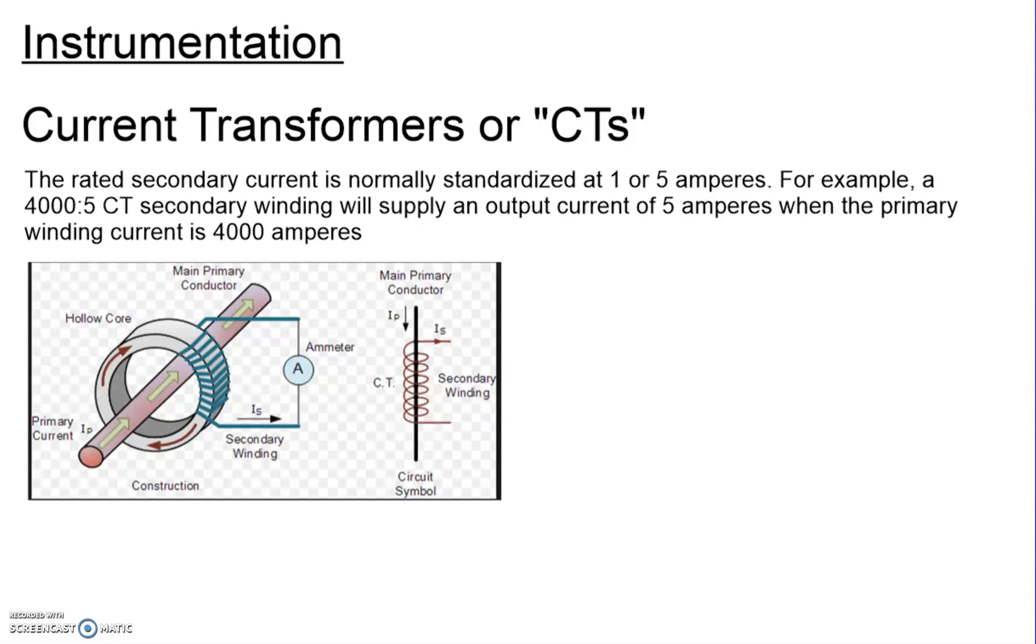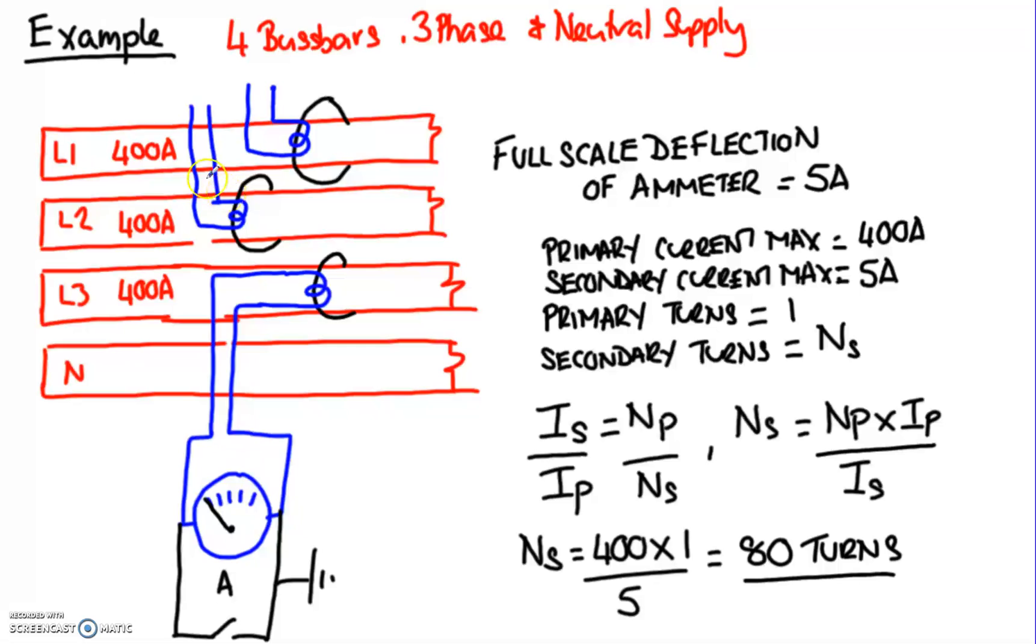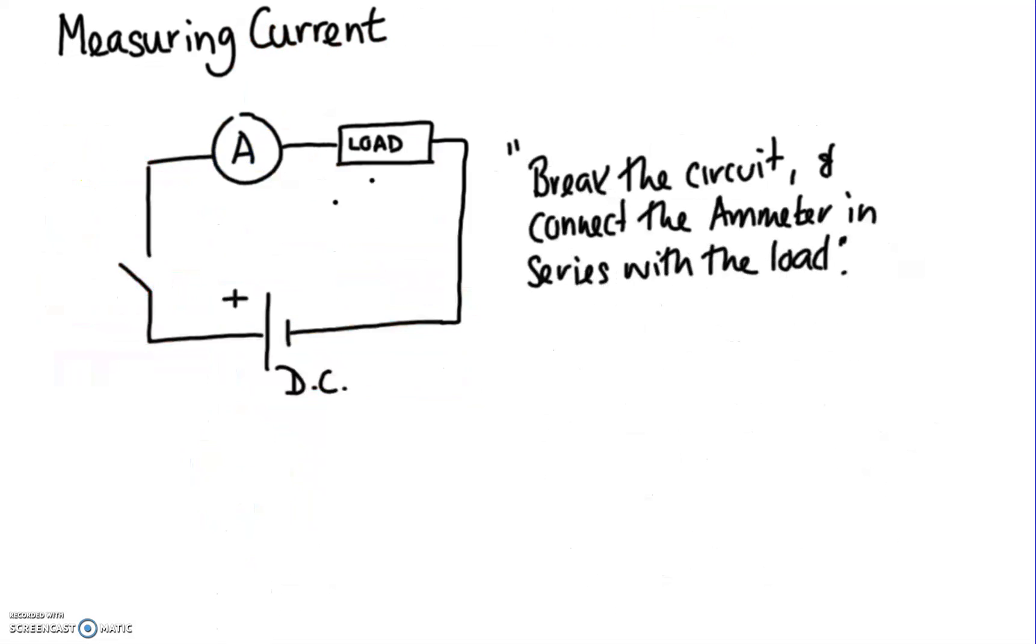Hi guys, we're going to look at instrument transformers, starting off with the current transformer. So on AC supplies, it's very difficult to break the circuit and connect an ammeter into the circuit.